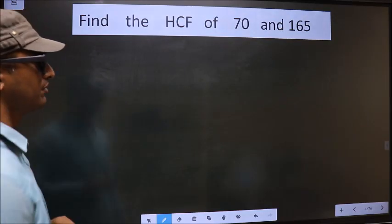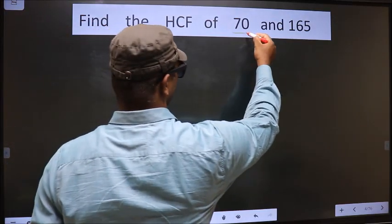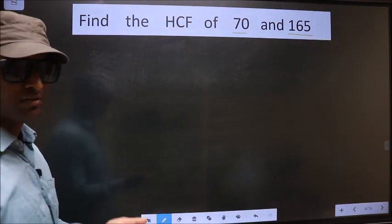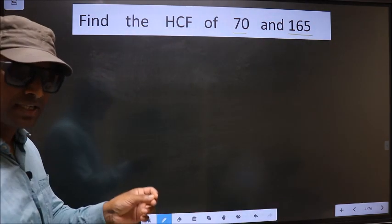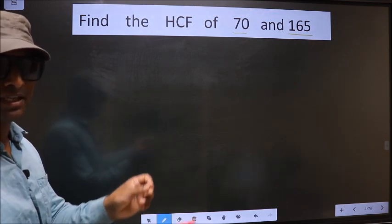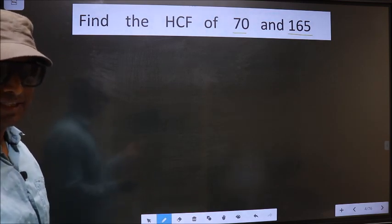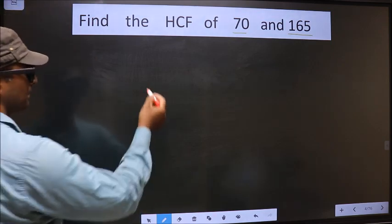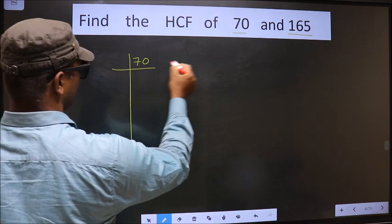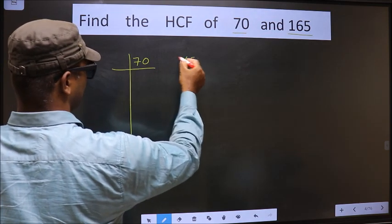Find the HCF of 70 and 165. To find the HCF, first we should do the prime factorization of each number separately. 70 here and 165.